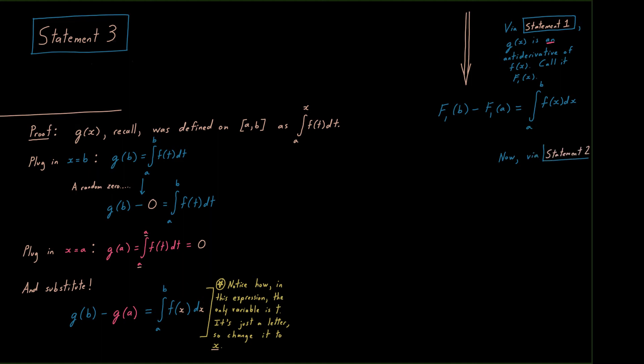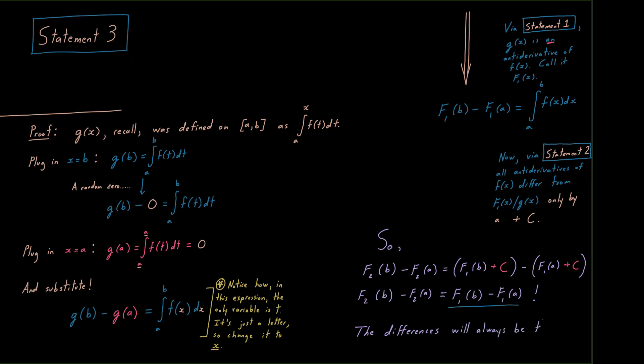And from here, we do something profound. We note via statement number two that every single anti-derivative in existence for lowercase f is going to differ from f sub one, is going to differ from g only by a factor of plus c, only by a plus c. Well, what does that mean? That means that if, say we pick some other derivative, capital F sub two, the difference between capital F sub two evaluated at b minus capital F sub two evaluated at a is just going to be the exact same difference as f sub one evaluated at b minus f sub one evaluated at a because those plus c's go away. The differences will always be the same for any anti-derivative you pick. It doesn't matter which anti-derivative you pick.